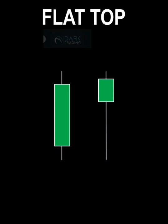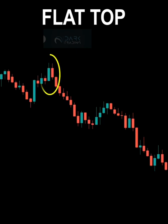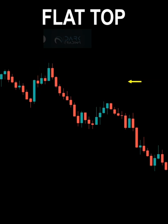The flat top pattern occurs when the highs of two candlestick charts are the same. It doesn't matter what color the real body is, how long the real body is, or whether there are shadows. Flat top is a pattern signaling a reversal, especially when the following candlestick chart is a superb bearish chart.